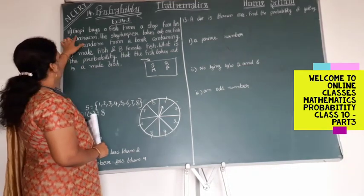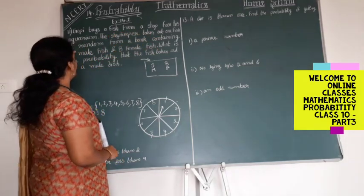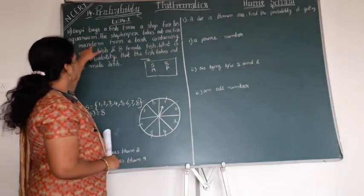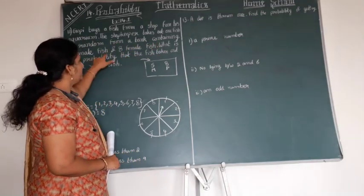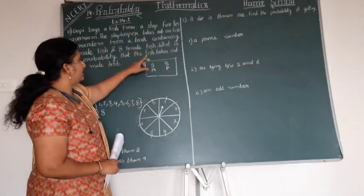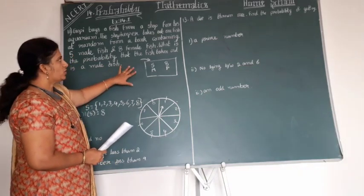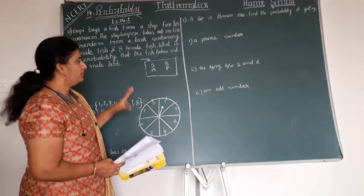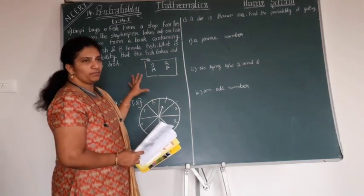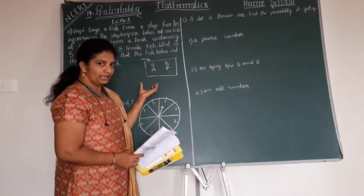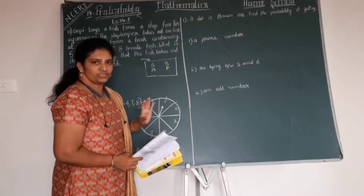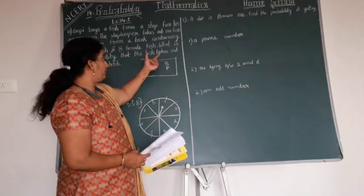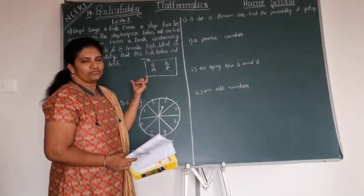So already you can see the question here. Gopi buys a fish from a shop for his aquarium. Can you see the small aquarium here? The shopkeeper takes out one fish at random from a tank containing 5 male fish and 8 female fish. What is the probability that the fish taken out is a male fish?